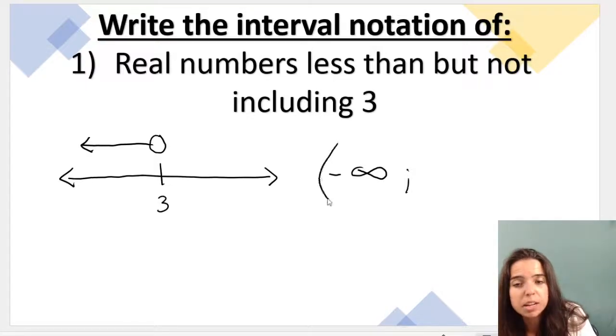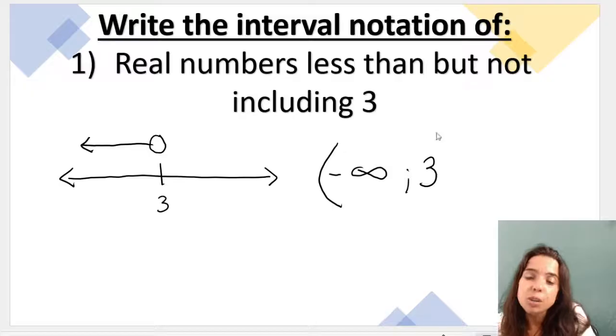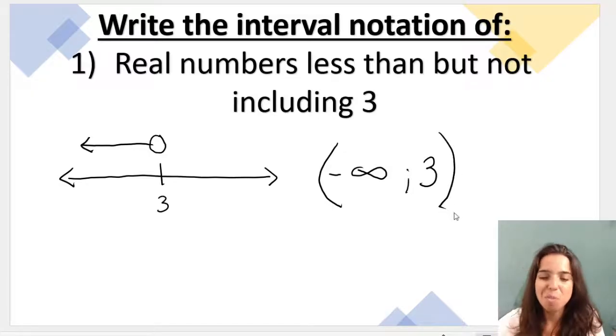And we use a round bracket with negative infinity. And then we said it goes to 3, but not including 3. So it's going to be another round bracket, which means excluding.